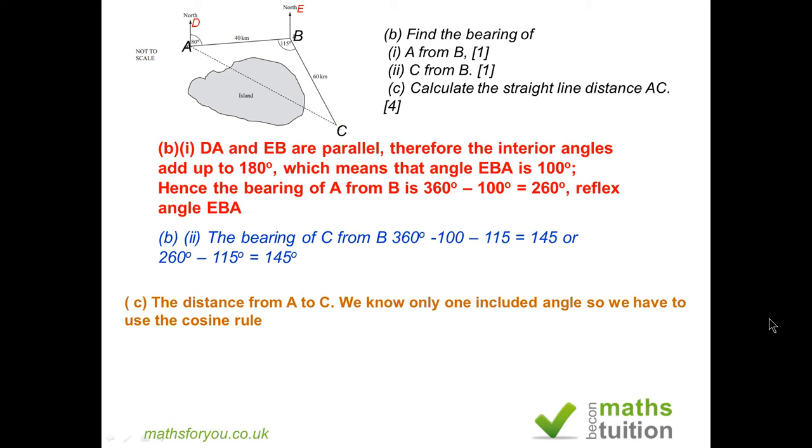Next up, we want to find the distance from A to C. A to C is opposite 115 degrees, and we know that the angle at B is an included angle between the line AB and BC. We don't know any other angles, so we have to use the cosine rule. That tells us that AC squared is equal to 40 squared plus 60 squared minus 2 times 40 times 60 times the cosine of the included angle 115 degrees, and that gives us 7228.56. Don't forget that 7228.56 km is AC squared; we need to find AC. Hence we need to do the square root of 7228.56, and AC is now 85.02 km, and to the nearest km is 85 km.